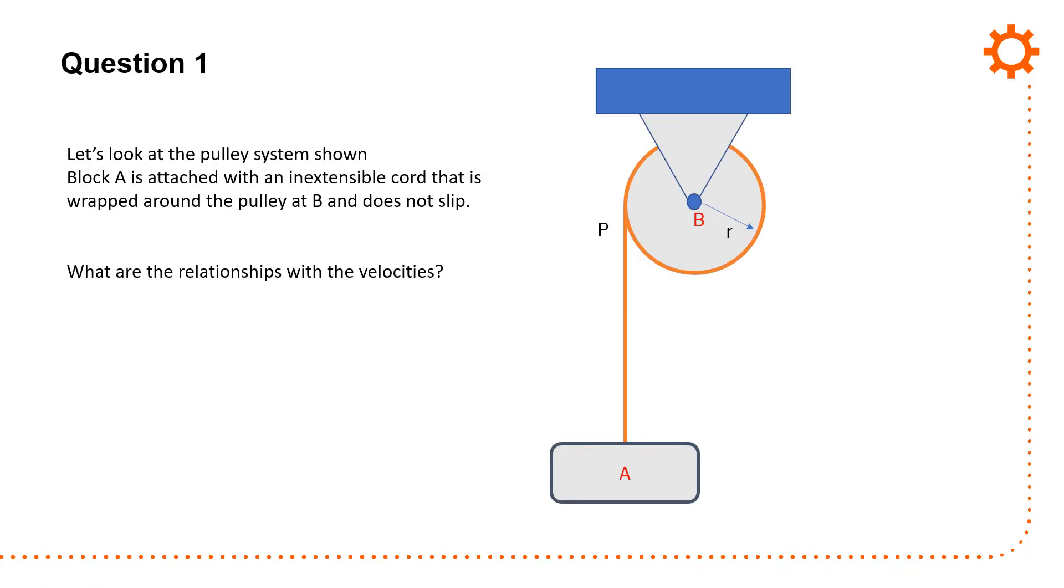If you look at this, we have a pulley system shown. In that pulley system you have a block which is being pulled up. Block A is being pulled up with a pulley at B, so it's attached with an inextensible cord and it's wrapped around that pulley so it doesn't slip. What are the relationships with the velocities?